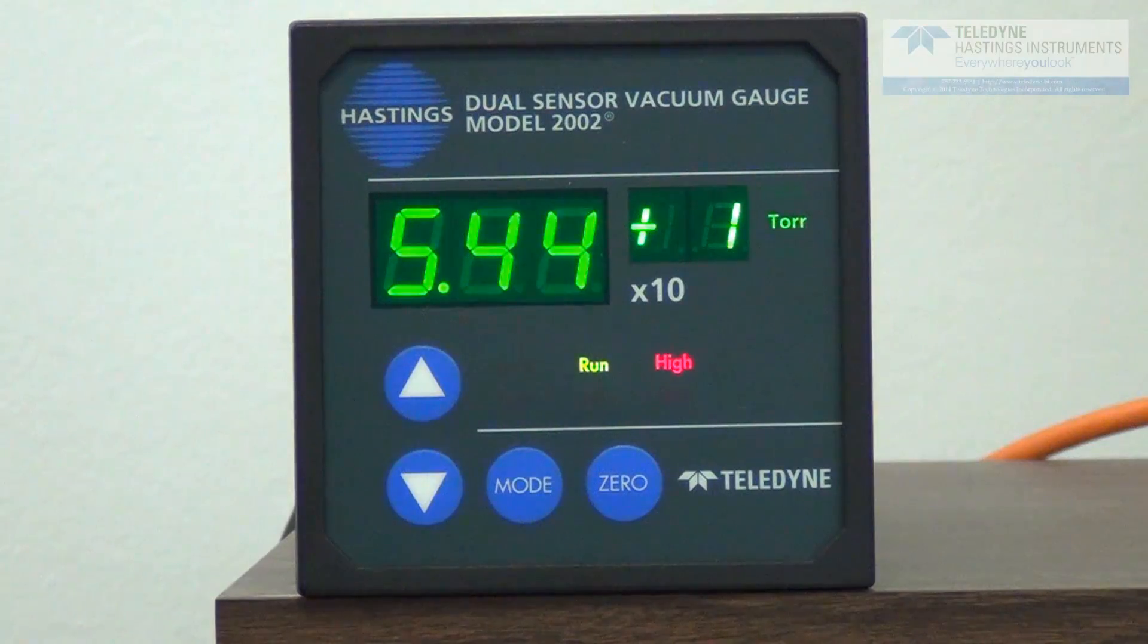So you see we're approaching 50 torr here, and we're going to get into the 32 torr region, the crossover region. And again, the microprocessor is always looking at both sensors. So now we're into the crossover region.